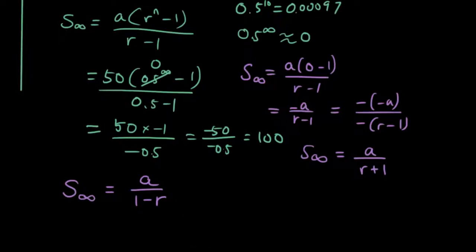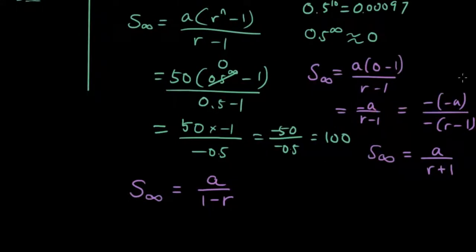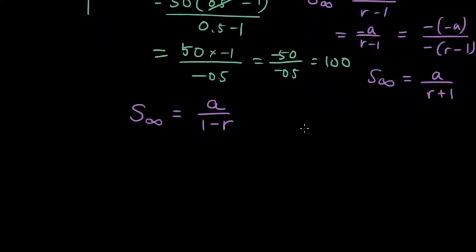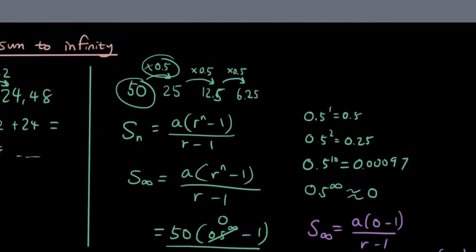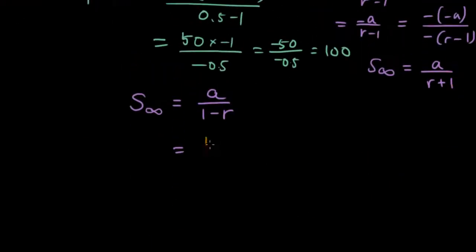So if we just use this formula, then we can work it all out really quickly, because we can simply substitute a as 50, and r as 0.5, so it's 50 over 0.5, which is 100. So you can just use the formula from the beginning. And that's what you guys are going to do for the following practice questions.